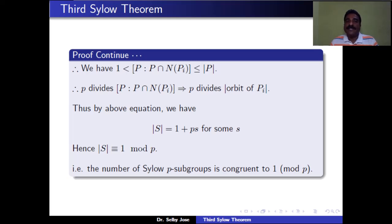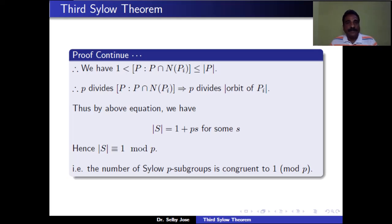Therefore the index of P ∩ N(Pi) in P is not equal to 1, and since it divides the order of P, P must divide this index. That means P divides the number of elements in the orbit of Pi. So |S| equals the size of the orbit of P plus the sizes of all other orbits. Only the orbit of P1 contains one element, and for all other orbits P divides the orbit size. Therefore the cardinality of S equals 1 plus P times something, so |S| ≡ 1 mod P.